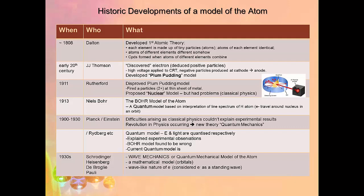In the early 20th century, J.J. Thompson discovered the electron, which was deduced from positive particles. A high voltage was applied to a cathode ray tube, and negative particles produced at the cathode traveled to the anode. He then developed the plum pudding model of the atom, which indicates that an atom is a sphere with some protons, neutrons, and electrons within it, but not arranged in any organized way.